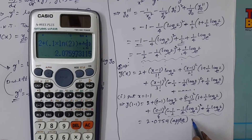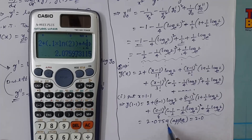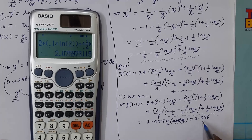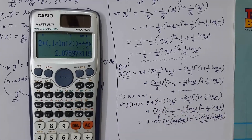Corrected to 3 decimal places, y(1.1) ≈ 2.076. In a similar way, replace x = 1.2 in the solution to get y(1.2). You can easily compute that value using a scientific calculator — please do it yourself and comment your answer in the chat box. In the next session I will give another example on Taylor series method. Thank you.